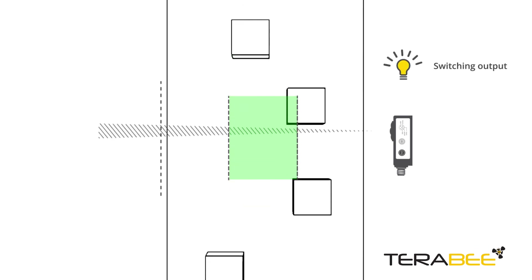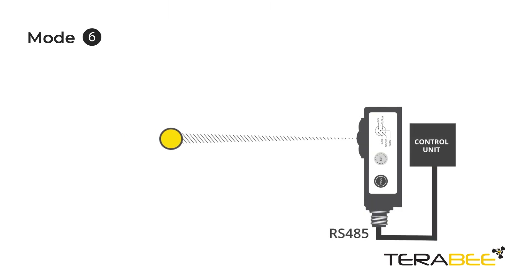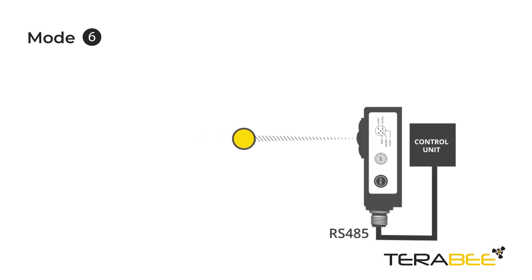All operating modes support distance data communication at all times. Mode 6 has been developed to obtain only calibrated distance values without the use of a switching output.